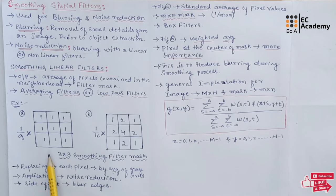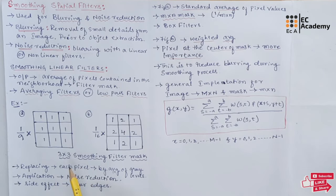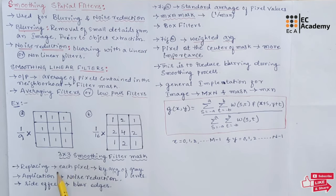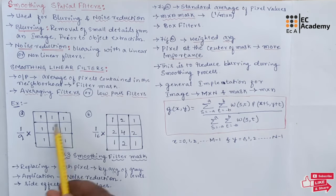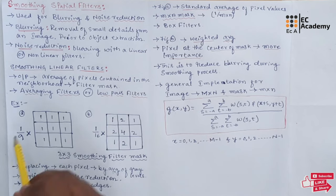This figure shows the example of 3 cross 3 smoothing filter mask. You can use 5 cross 5 filter mask, 7 cross 7 filter mask, 9 cross 9 filter mask. So you can take the odd values of these and you can take the smoothing filter mask. So here we are considering 3 cross 3 smoothing filter mask. In figure a, the filter mask is having 3 cross 3 values. So 3 cross 3, it will be 9.